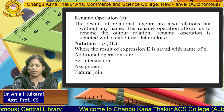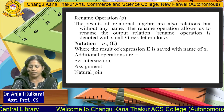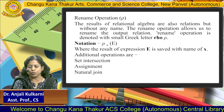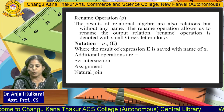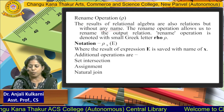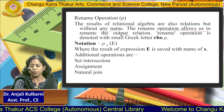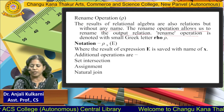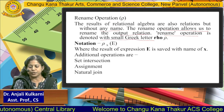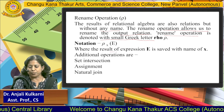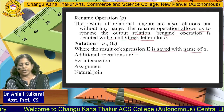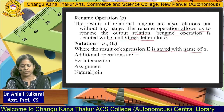Next is the rename operation. The results of relational algebra are also relations but without any name. The rename operation allows us to rename the output relation. It is denoted with the small Greek letter rho (ρ). The result of expression E is saved with the name X using rho.